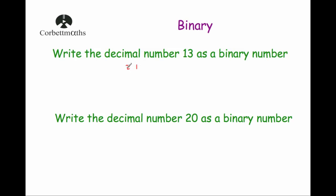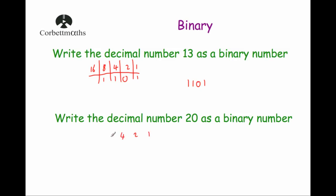Let's look at two more examples. Writing 13 as a binary number: write the column headings — 1s, 2s, 4s, 8s, 16s. To get 13, that's an 8 plus a 4 plus a 1, which is 8 + 4 = 12 + 1 = 13. So the binary number is 1101. For the number 20: writing column headings 1, 2, 4, 8, 16 — we'd use a 16 and a 4, so the binary number is 10100.